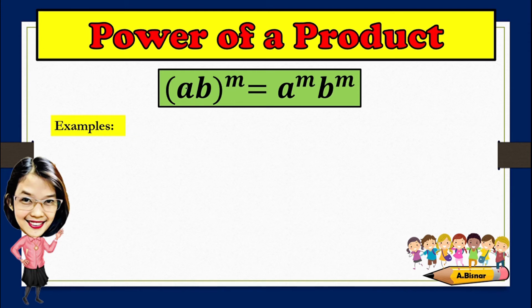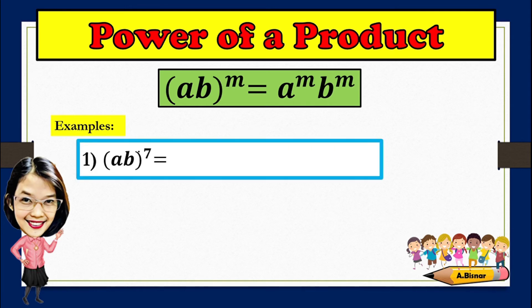Now we will discuss power of a product. The product of a and b raised to m is equivalent to a raised to m, b raised to m. For example, we have the product of a and b raised to the seventh power. The exponent of a and b here is 1. So for a: 1 times 7 is 7. For b: 1 times 7 is also 7. That is why the answer will be a to the seventh power, b to the seventh power.